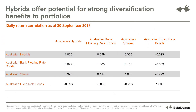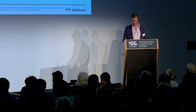Another factor is that hybrids have a low correlation to other asset classes — the way they move compared to other asset classes isn't particularly strongly linked. Looking at the correlation numbers, the lower the number, the less likely hybrid securities would move in line with other asset classes. What that means is they tend to find their own path, which makes them an attractive diversifier.